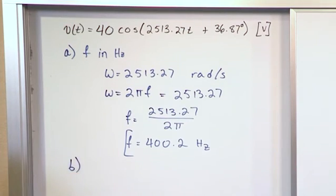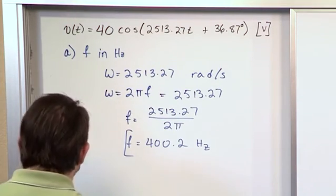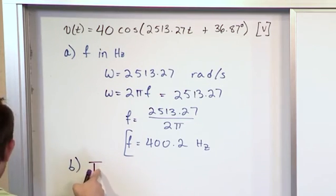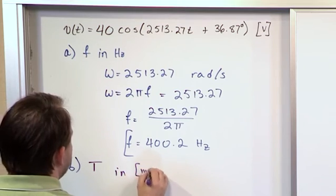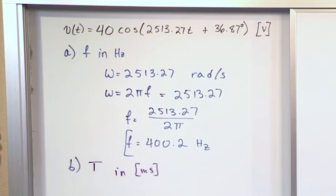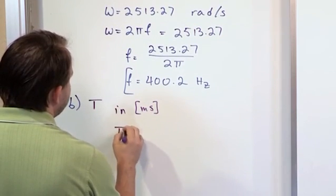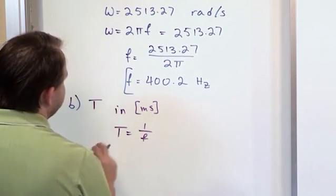Part B, let me change colors. Let's say part B asks us, what is the period, which we call T, in milliseconds? How would we find the period? Well, once we know the frequency, we should remember that the period is 1 over the frequency. It was one of the equations.